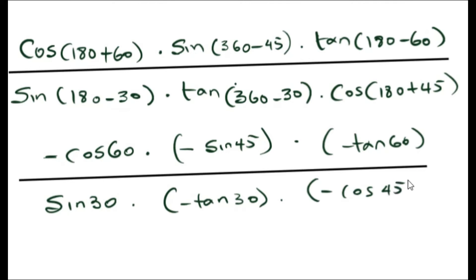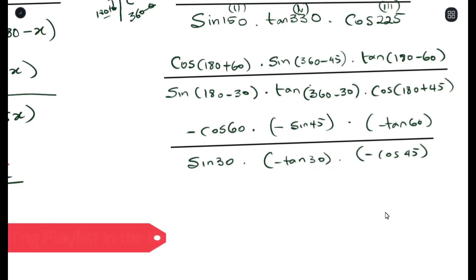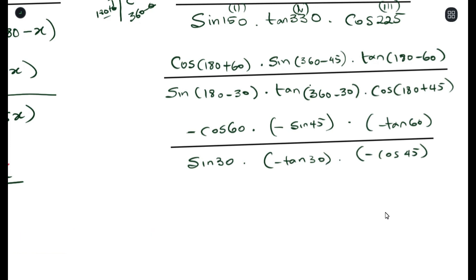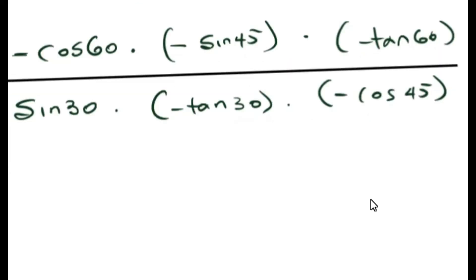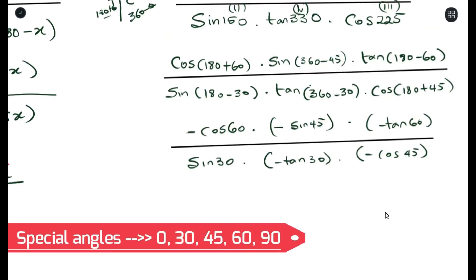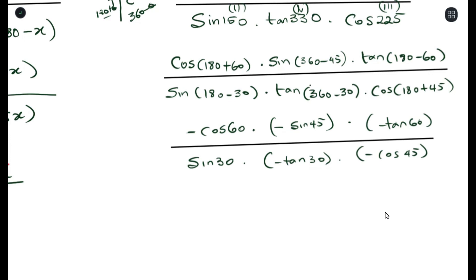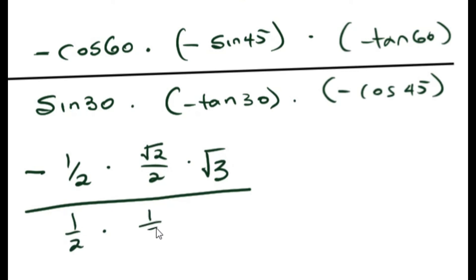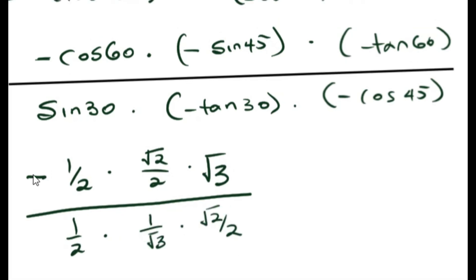In a previous video we covered special angles. We're simplifying this without a calculator, and you'll notice every single value here is a special angle. So we substitute each term with its special angle equivalent. In the numerator, negative times negative times negative gives a negative value overall. In the denominator, positive times negative times negative gives a positive value, which is why there's no negative sign there.